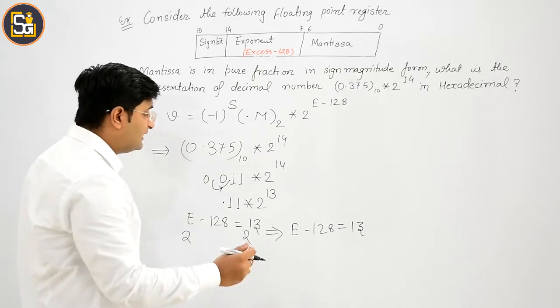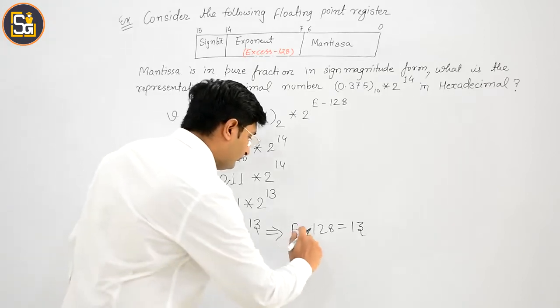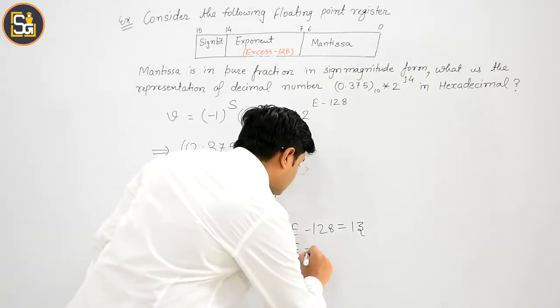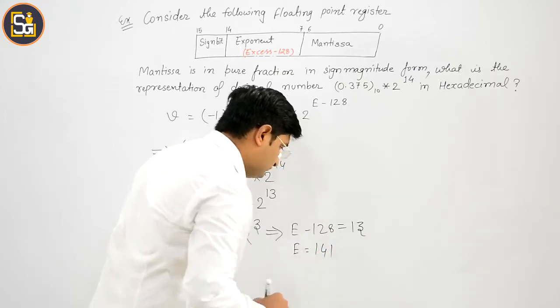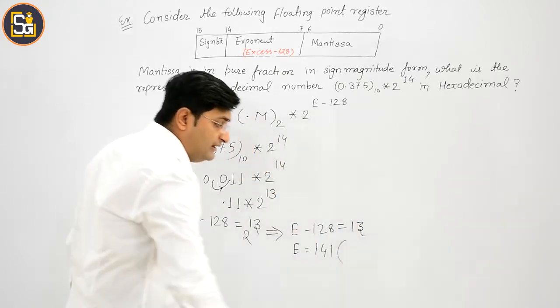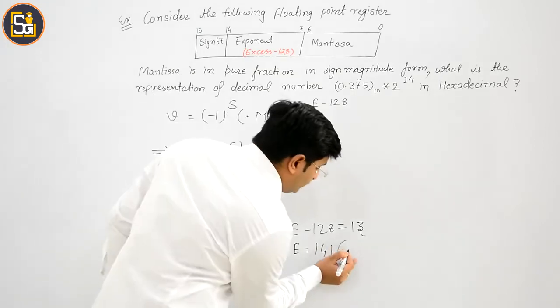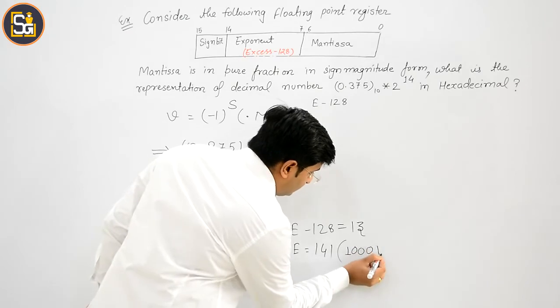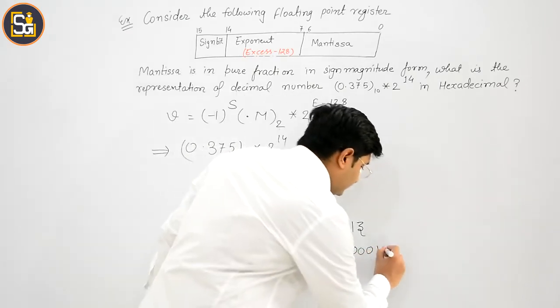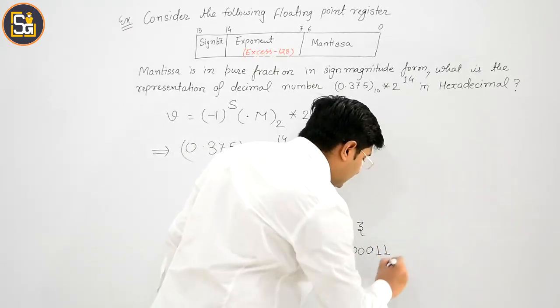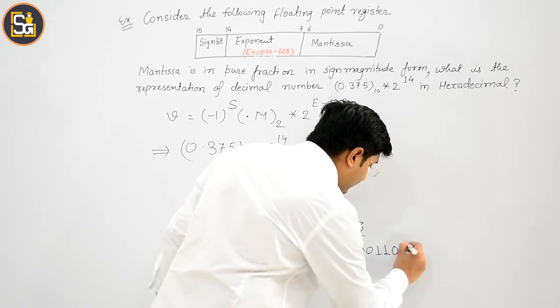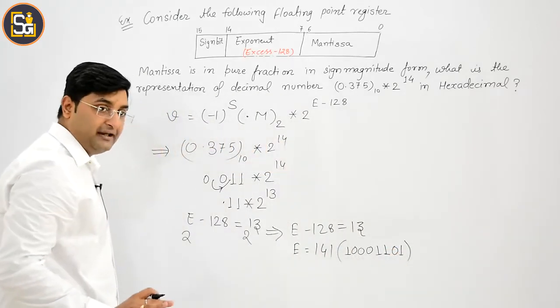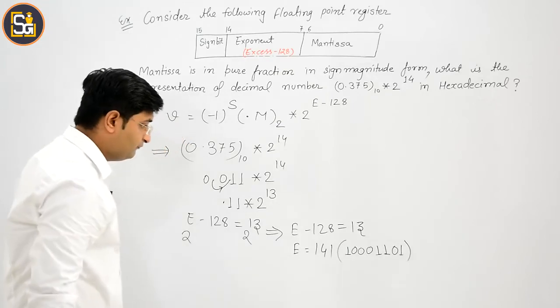Now, अब आता है आपका E is equal to 141. 141 का binary अगर आप देखेंगे, तो 128, 64, 32, 16, 8, 136, 4, 140, 2, और 1. 141 हो गया.